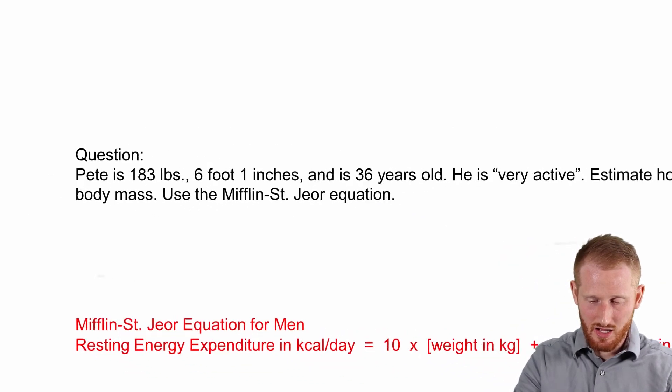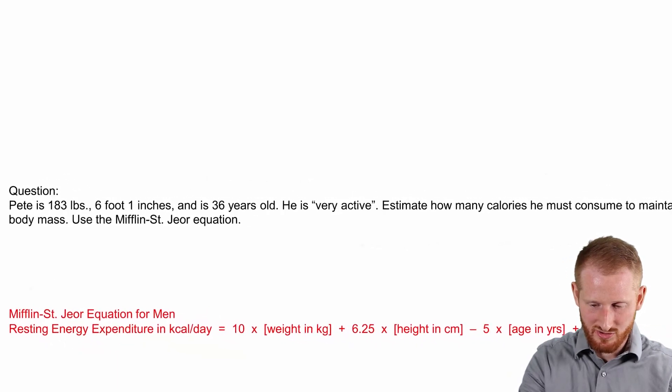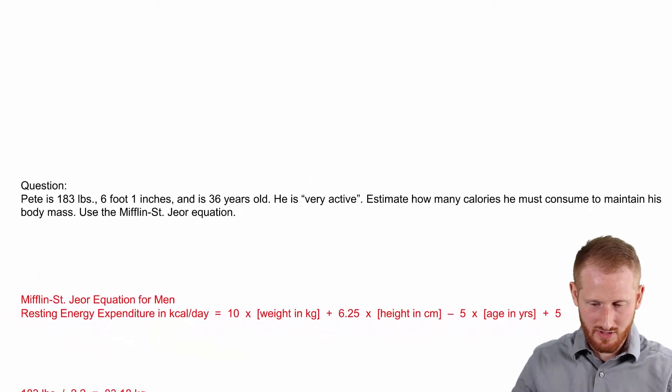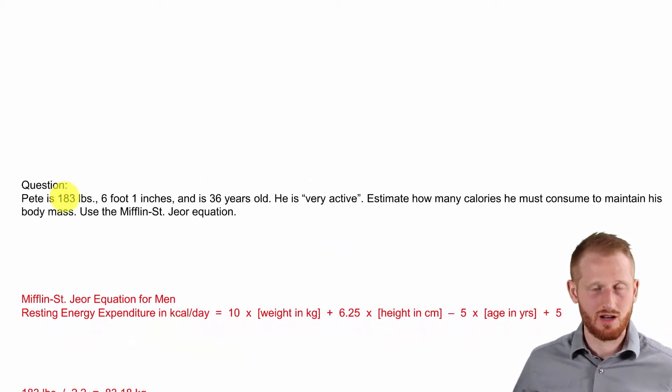Alright. So let's get to an example person here. So we have Pete, who is 183 pounds. He's 6 foot 1 inches tall, 36 years old.